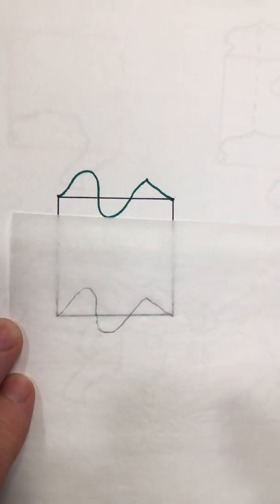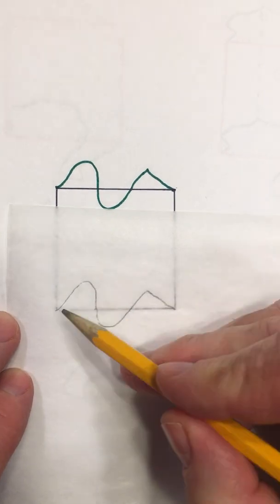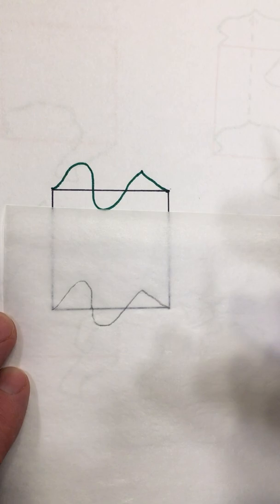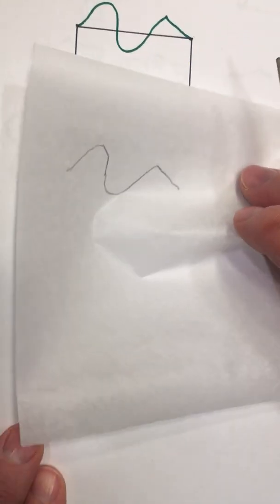Now my goal is I have to transfer this squiggle to the paper beneath. How do I do that? Well, it'd be nice if this was carbon paper because I could just push on it and it would leave a little imprint below, but it's not. But I'm going to make my own carbon paper.